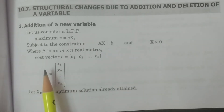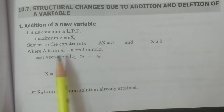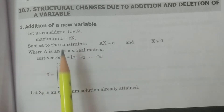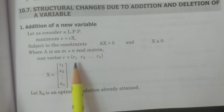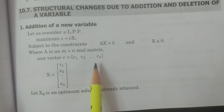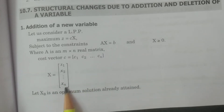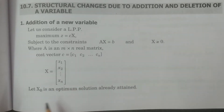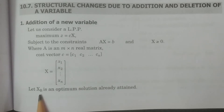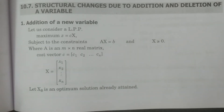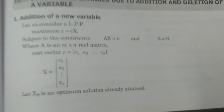Here I explain the terms: A is an M by N real matrix, cost vector C consists of N constants C1, C2, and so on, Cn in matrix form, and X equals X1, X2, ..., Xn, a column vector consisting of N variables. Let us consider XB is an optimum solution that is already obtained. Remember, it is already obtained.